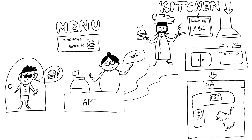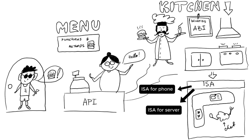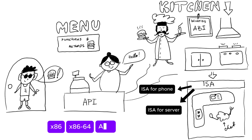Different ISAs are made for different needs. For example, your phone might need one ISA, while a high-performance server needs another. The five most popular ISAs are x86, x86-64, ARM, MIPS, and RISC-V.